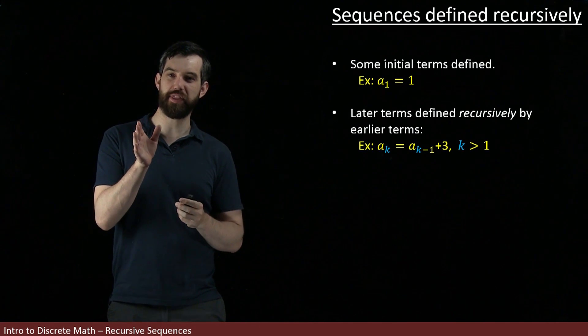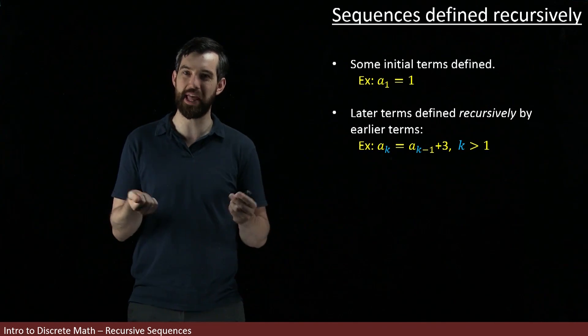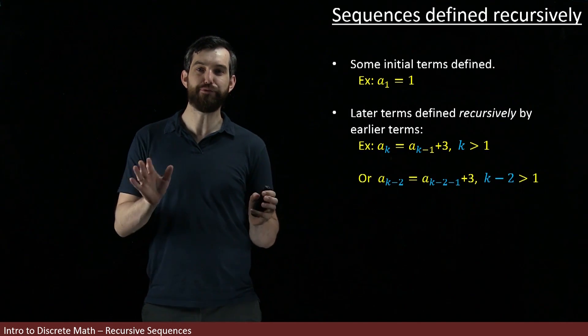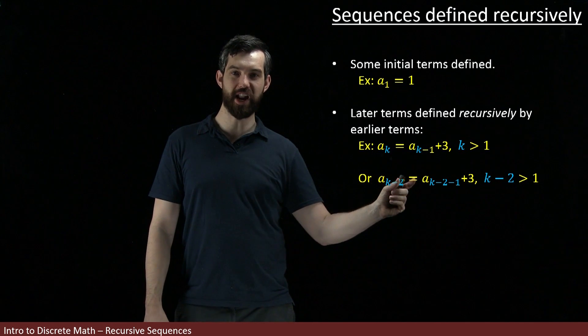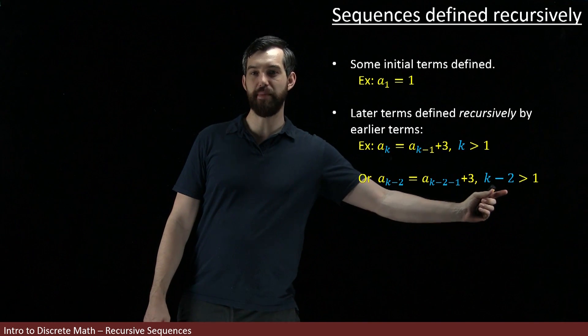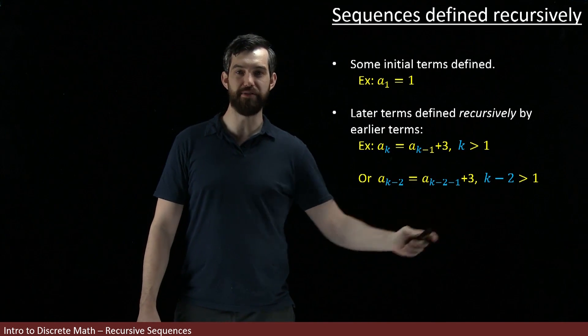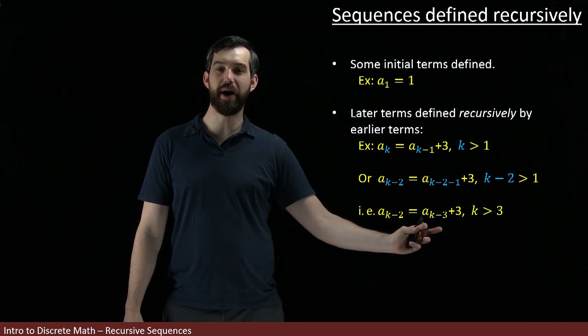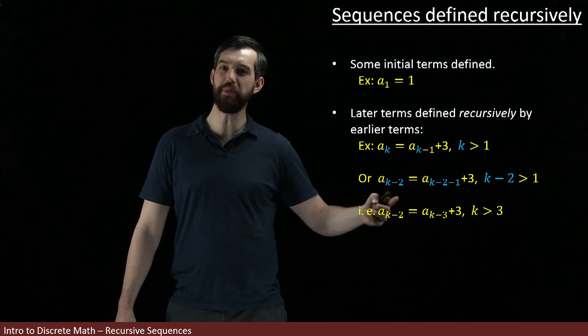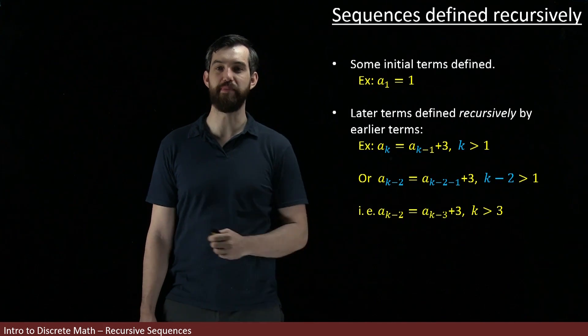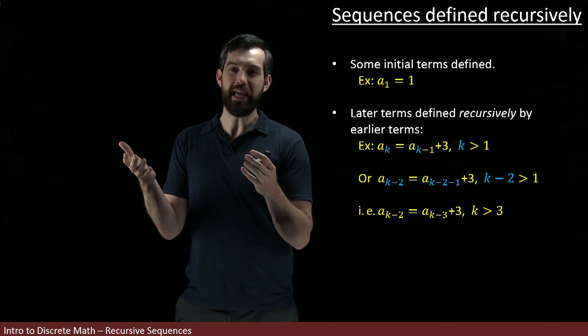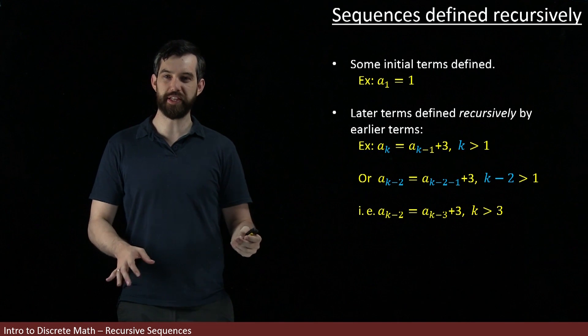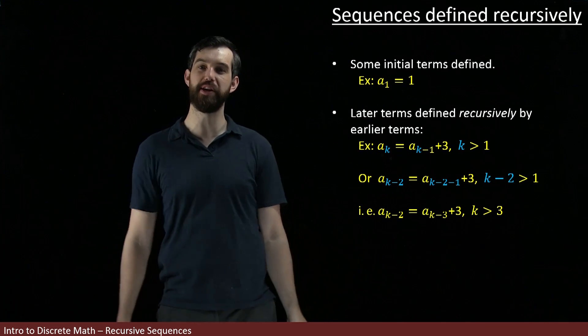Now, note that in this formula, k is just a placeholder. I could put anything there. I could put some other symbol. For example, in this formula, what I've done is I've taken everywhere that there was a k up here, and I put in k-2. And if I take the 2 to the other side, I can rewrite this as Ak-2 = Ak-3 + 3, and that this formula is only valid in the space k being bigger than 3. So the immediate takeaway is that these recursive formulas are not unique. The first one and this one are the same basic underlying sequence, but they're just expressed in a different way.